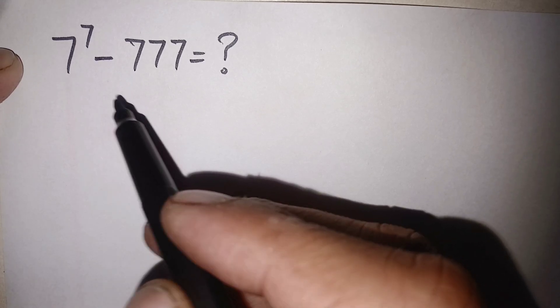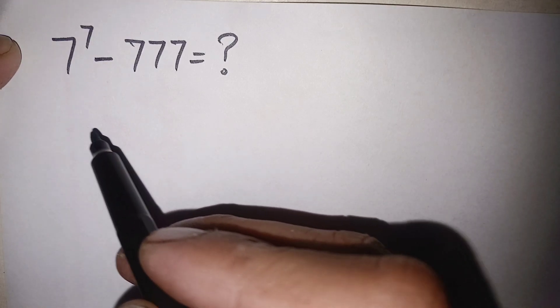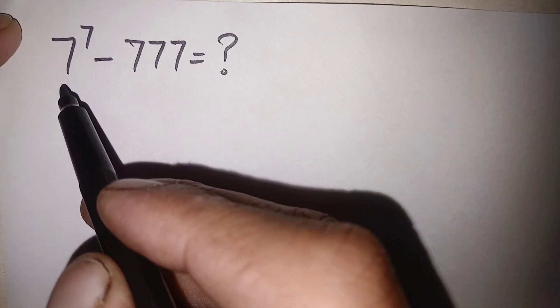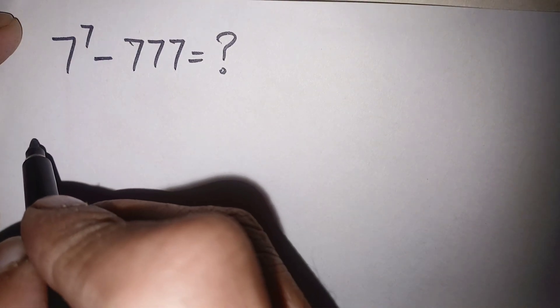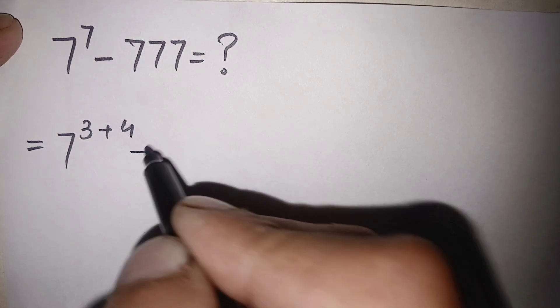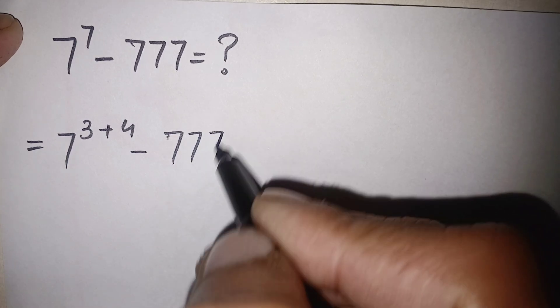First of all, we will try to find out the value of 7 raised to power 7, which means we have to multiply the base 7 seven times. Since it would be very difficult to multiply 7 seven times without a calculator, we will change this power to a simplified form — the sum of two other numbers. So we can write this as 7 raised to power 7, where the power 7 is written as 3 plus 4, minus the number 77777.